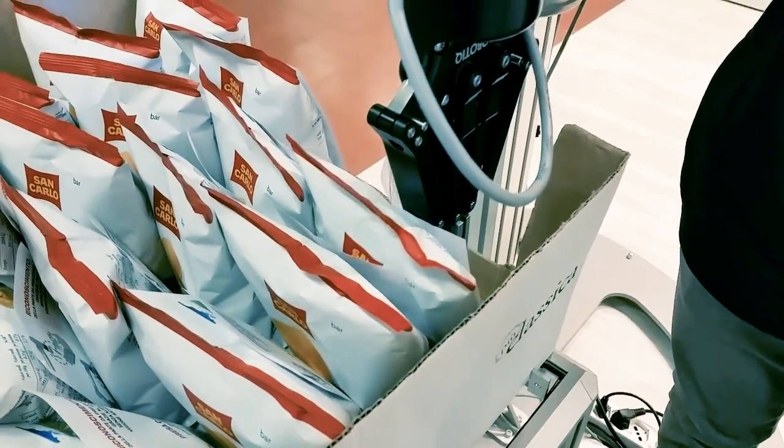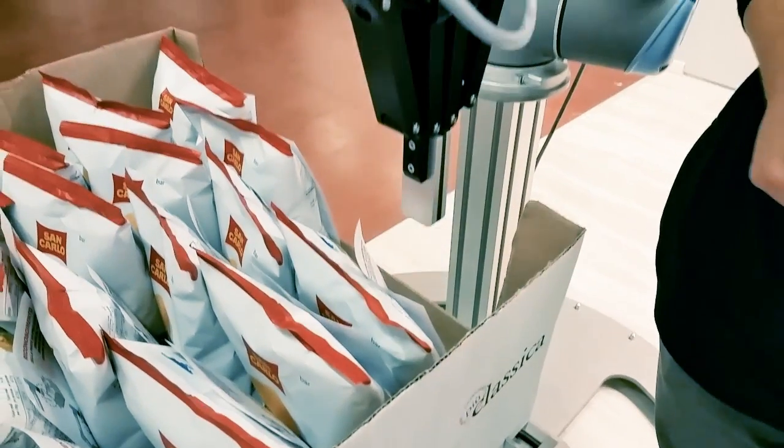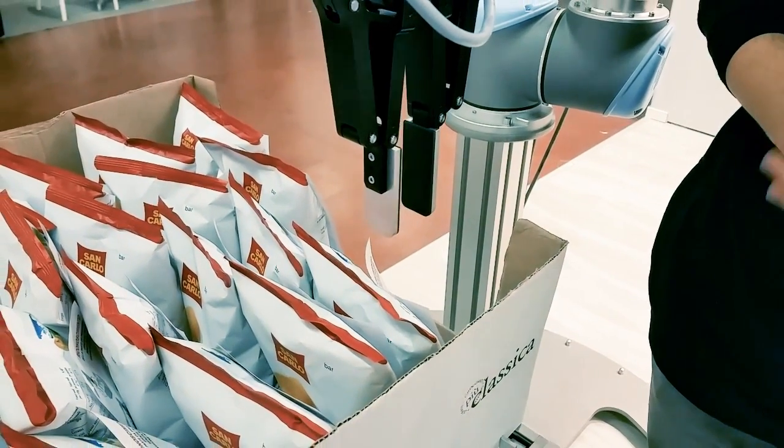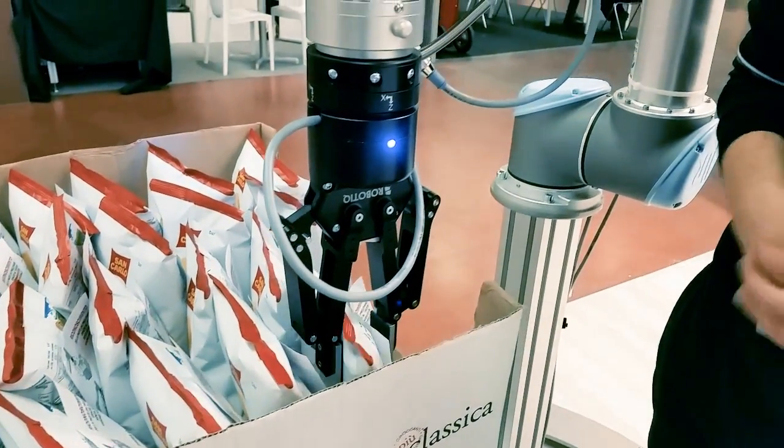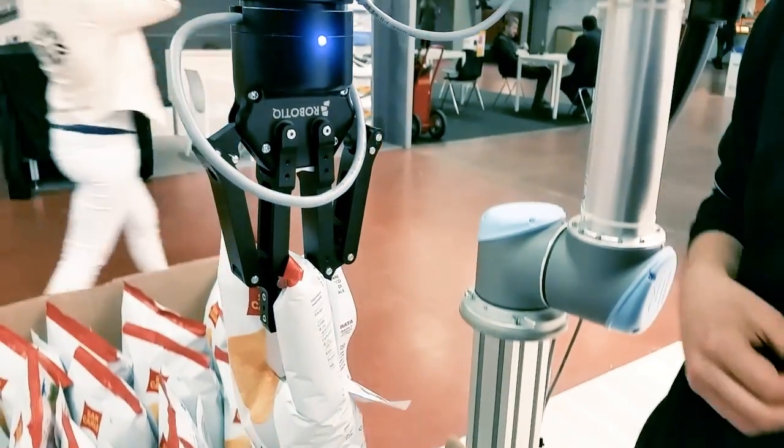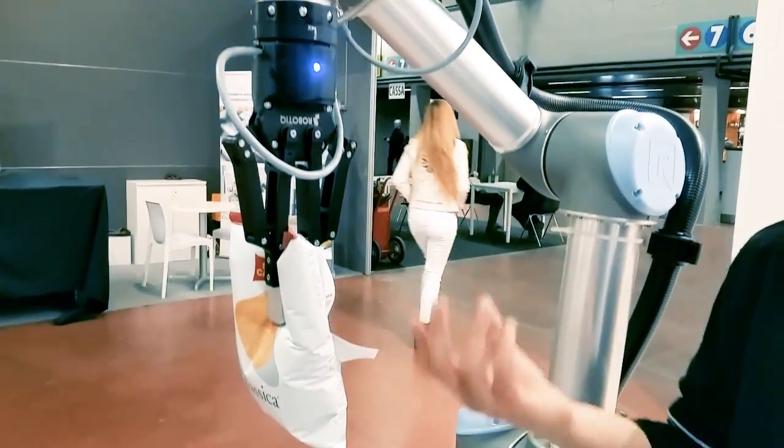When the gripper detects a delta which is greater than a certain value, the robot grasps the object and takes it to the first position.